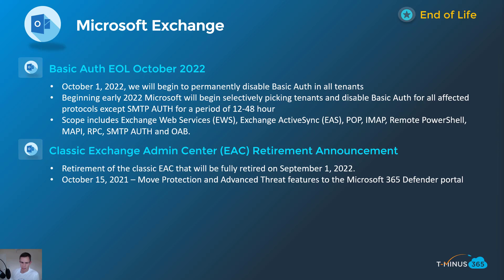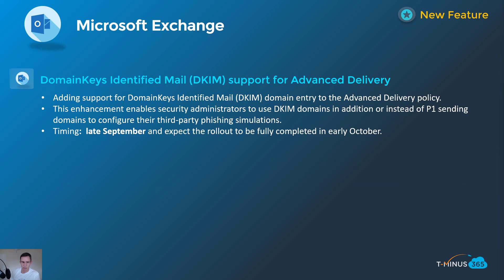Next, the classic Exchange admin center is retiring as well. You've probably already seen or are using the new Exchange admin center, which has more of that modern look and feel the rest of the admin centers are moving to. They are going to deprecate it in September of next year. It's important to note that as of October 15th of this year, they're going to move all the protection and advanced threat features into the Microsoft 365 Defender portal — including safe attachments, safe links, all the components that come with Defender for Office 365, as well as anti-phishing and anti-malware policies.